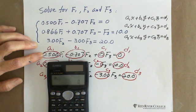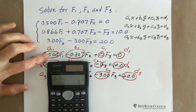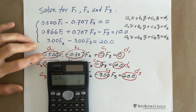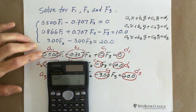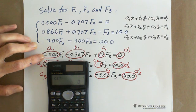0.500 - it's not necessary because 0.5 and 0.500 is the same thing. Enter. B1 is negative 0.707, enter. C1 equals 0. D1 equals 0.